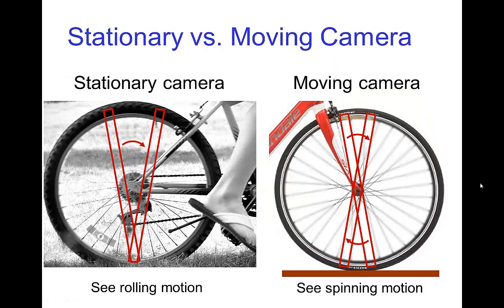The stationary camera actually sees rolling, whereas the moving camera tracking the wheel sees the spinning of the wheel instead of the rolling. This is worth emphasizing because motion often looks different depending on what the camera is doing and how the camera is moving.